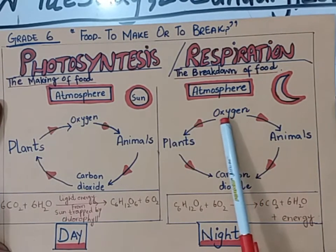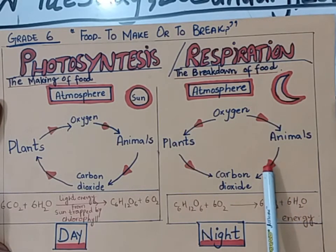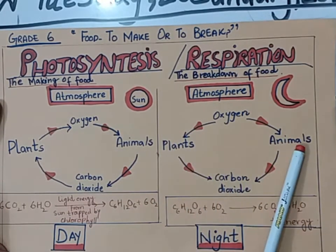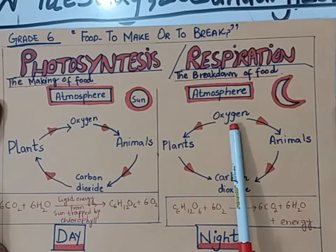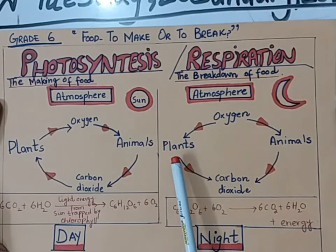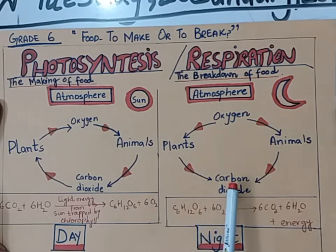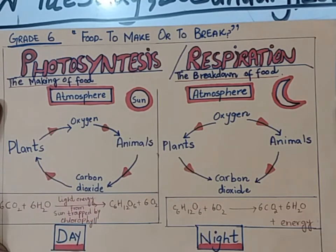This oxygen is utilized by both plants and animals during the night. Both plants and animals require oxygen for the process of respiration, and then both release carbon dioxide into the atmosphere. This carbon dioxide is then used on the next day by plants during the process of photosynthesis.